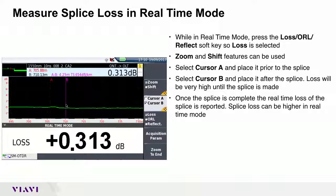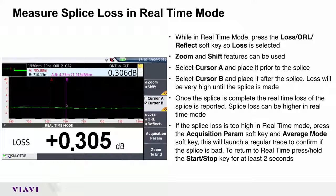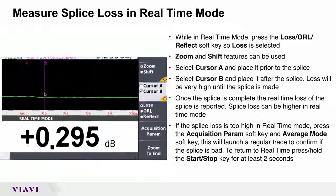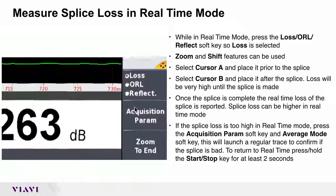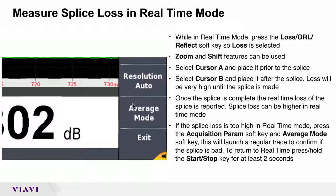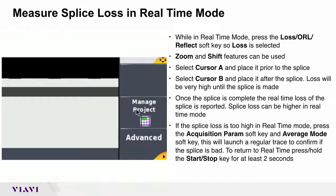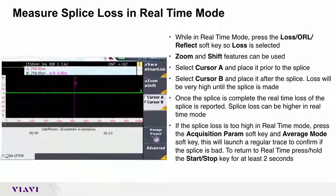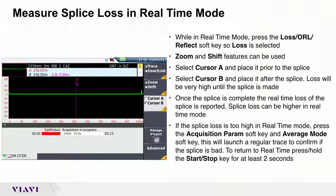Splice loss can be higher in real-time mode. If the splice loss is too high in real-time mode, press the acquisition param soft key and average mode. This will launch a regular trace to confirm if the splice is bad.